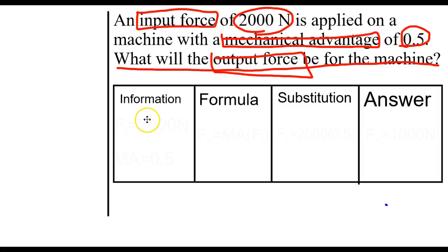We know that our input force is 2,000 newtons and mechanical advantage is 0.5. To find our output force, we multiply mechanical advantage times force input. That's given to us from the formula triangle.